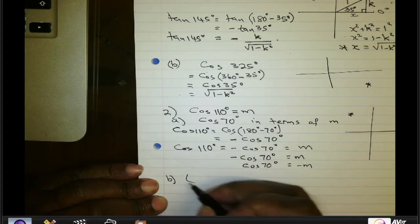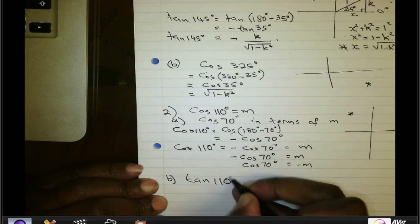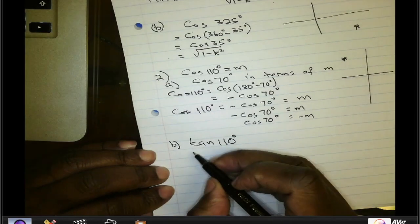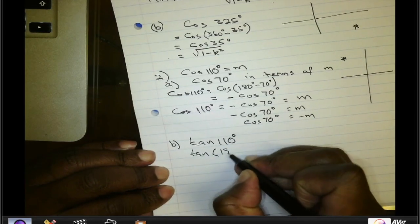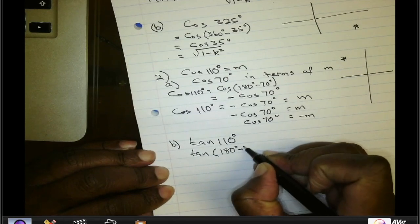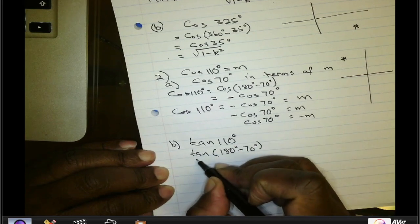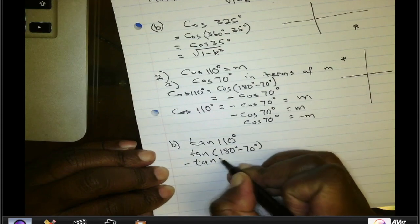Let's work out the tangent of 110 degrees. We can reduce that: tan(110°) = tan(180° − 70°), which is the same as negative tan(70°).